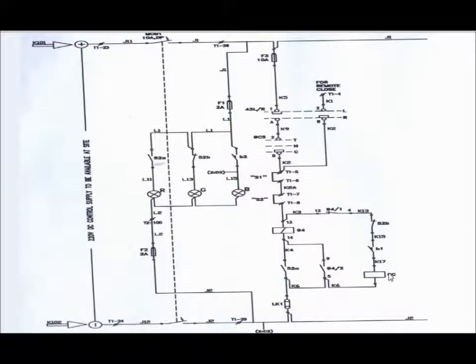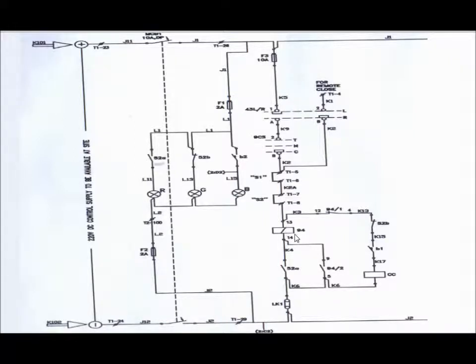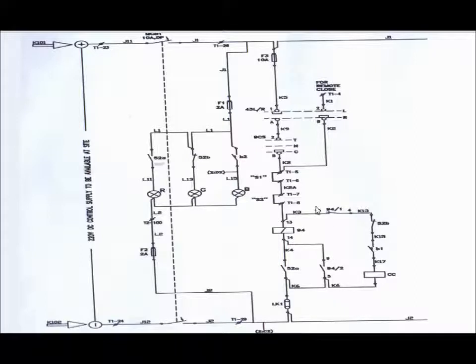CC is the closing coil of the circuit breaker. 94 is the anti-pumping relay located at the circuit breaker. 94/1 is the auxiliary NC contact of the anti-pumping relay, and 94/2 is the auxiliary NO contact of the anti-pumping relay. 52A is the auxiliary NO contact of the circuit breaker, and 52B is the auxiliary NC contact. B1 is the spring charge contact — if the spring is in charged position, this must be in NC (make) position.